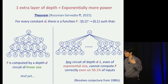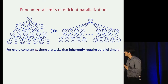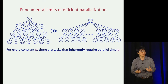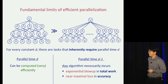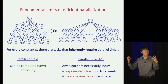Recalling the view of small-depth circuits as parallel algorithms, this shows that for every constant d, there are tasks that inherently require parallel time d. If allowed parallel time d, they can be computed very efficiently with linear total work. But if only allowed parallel time d-1, any algorithm necessarily incurs not just an exponential blow-up in total work, but also a near-maximal loss in accuracy.